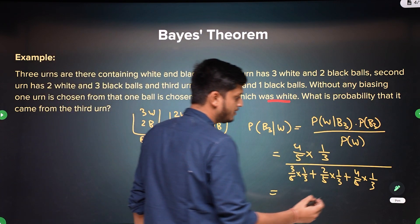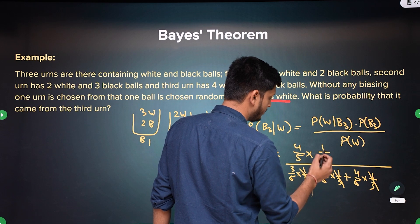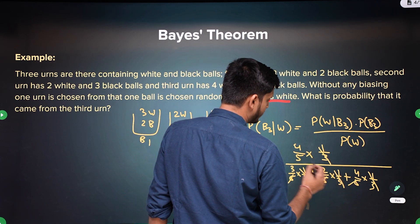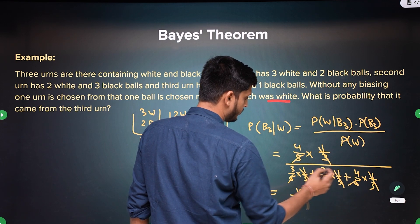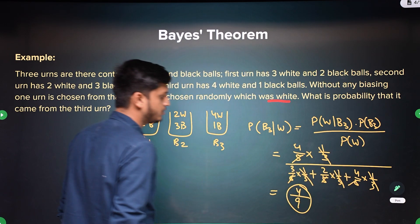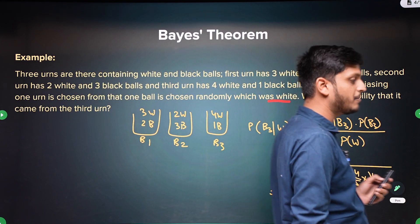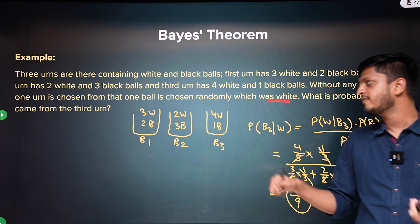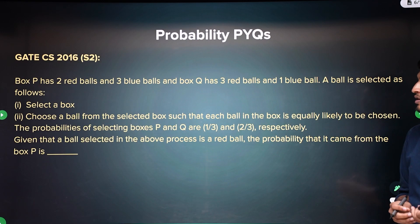Here the 1 by 3 terms cancel and the denominator 5 cancels throughout, so you get 4 over the sum 3 + 2 + 4, which is 4 by 9. This is the probability of the third bag being chosen given that the ball was white.